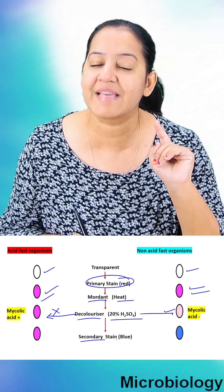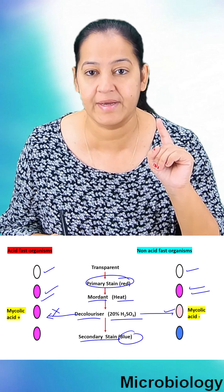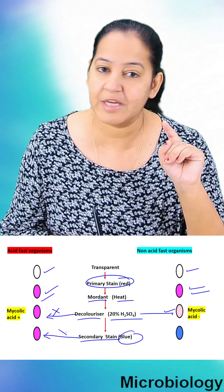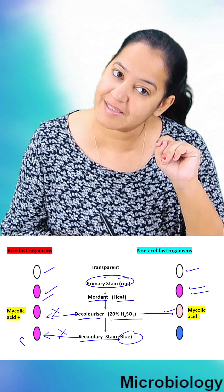Now the last step we use the secondary stain or counter stain which is blue in color. Now the bacteria which are resistant to the decolorizer, they don't have space. So they don't accept the secondary stain, they are still red in color.